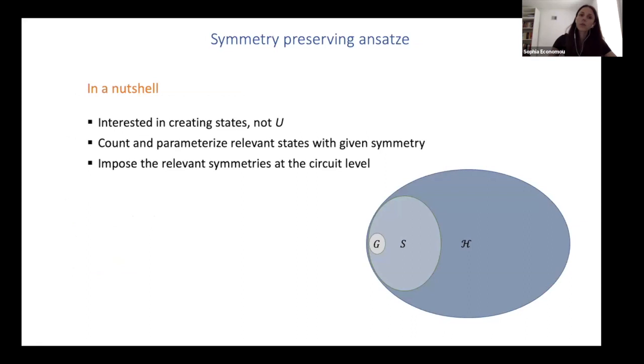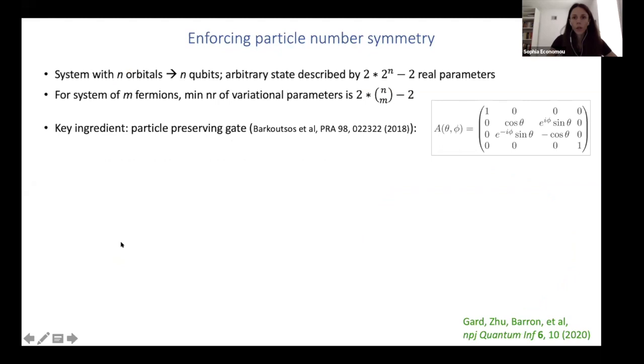So in the first case where we are encoding symmetries into an ansatz, we want to first point out that we're interested in creating states, not some general evolution algorithm. So what we can do is we can count and parametrize the relevant states with a given symmetry and then impose the relevant symmetries at the circuit level. So if you think of your Hilbert space, you might have a sector where the states of a given symmetry live. And then somewhere in there will be your ground state if you know it to have the symmetry.